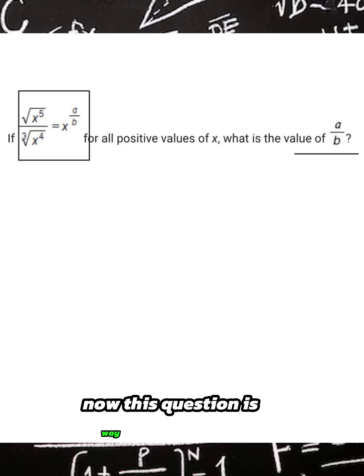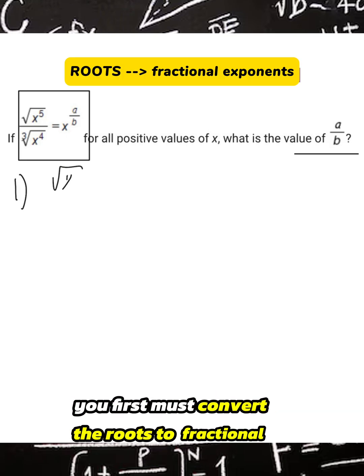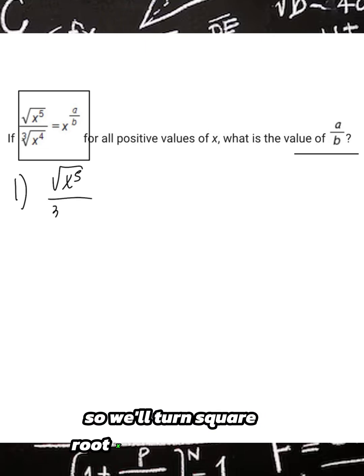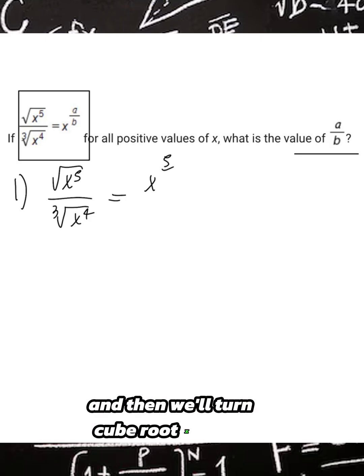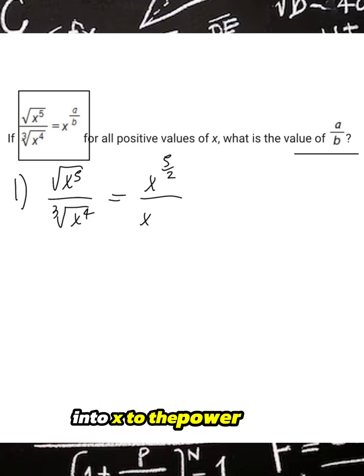Now this question is way easier than it looks. We first must convert the roots to fractional exponents, so we'll turn square root x to the power of 5 into x to the power of 5 over 2, and then we'll turn cube root x to the power of 4 into x to the power of 4 over 3.